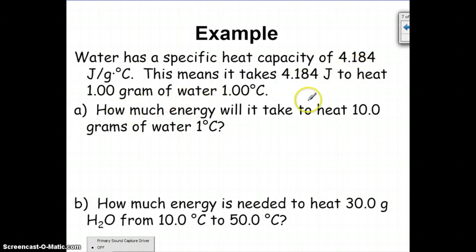How much energy would it take to heat 10 grams of water 1 degree Celsius? Well, we know that it takes 4.184 joules to heat 1 gram 1 degree Celsius. If you had 10 grams and you wanted to heat them 1 degree Celsius, you could just use the specific heat value as a conversion factor here.